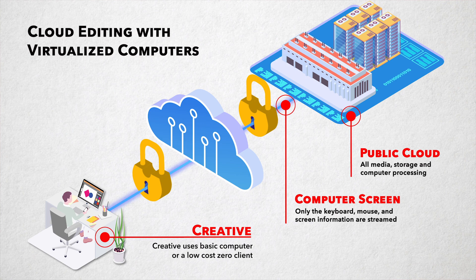This is how this particular cloud editing example is set up. I'm using Bebop technology, which has all of the computers, including the editing computer and storage, and they're located in a public cloud data center. I'm securely connected to that data center, and only the keyboard, mouse, audio, and computer screen information are being sent between my home setup and the cloud.